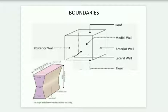The medial wall also has the sinus tympani and the cochleariform process. The lateral wall includes the tympanic membrane, squamous part of temporal bone, and the chorda tympani. The lateral wall can also be called the membranous wall.